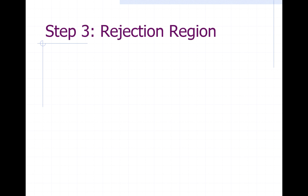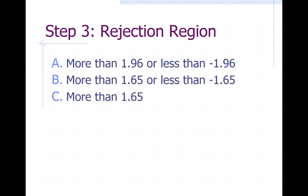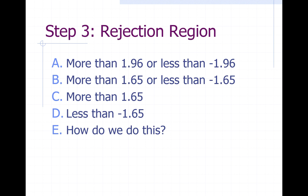Now that we've defined it as one-tailed, which describes our rejection region? We can cross off the option with 1.65 on both sides — that's not how a one-tail test works. A two-tailed test defines both tails as more than 1.96 or less than negative 1.96. A one-tailed test is either the upper tail (more than 1.65) or lower tail (less than negative 1.65) — combining both would give a 10% alpha rate. In this example, our answer is C: more than 1.65.